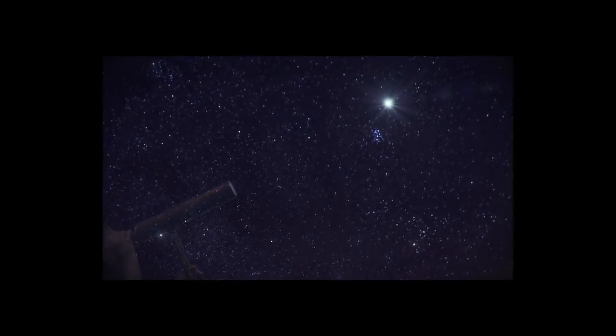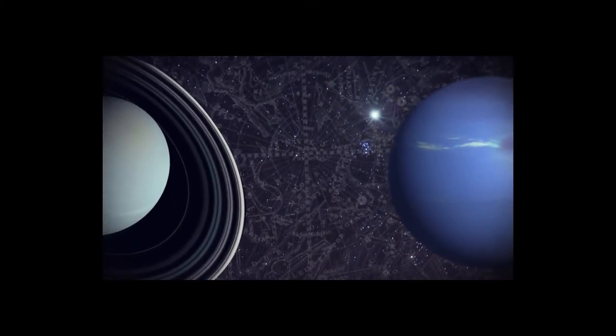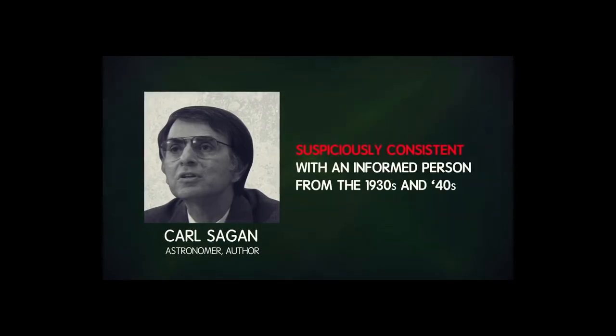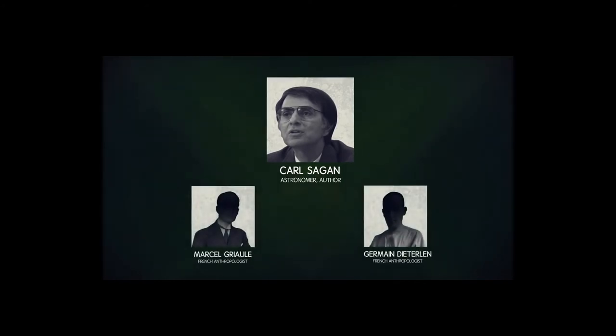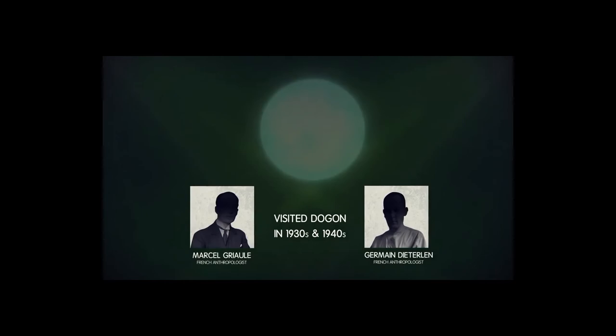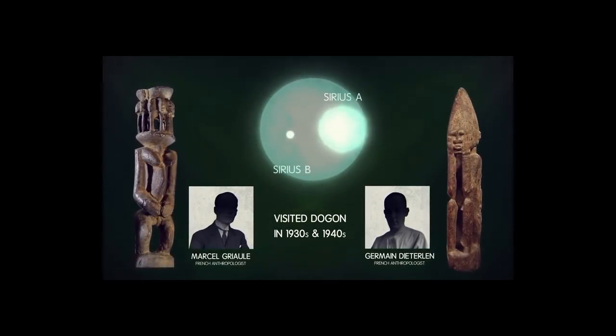However, if this were true, the Dogon would have also been able to see Uranus, Neptune, and other cosmic observations, which they did not. Another doubter is author Carl Sagan, who believes that the Dogon's cosmic knowledge is suspiciously consistent with an informed person from the 1930s and 40s. Sagan posits that the French anthropologists that visited during that time and broke the story of the Dogon merely entwined Sirius B into the Dogon's existing mythology to make an interesting story.